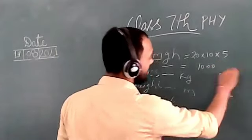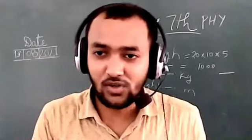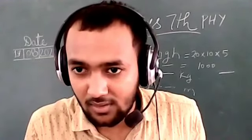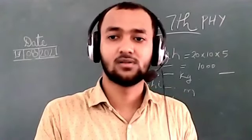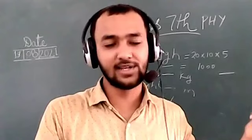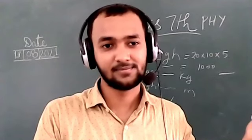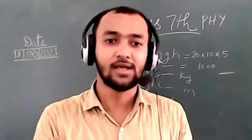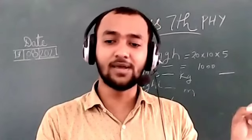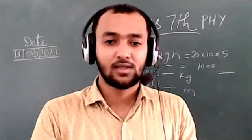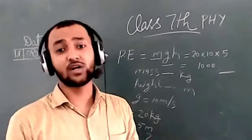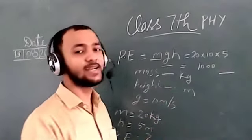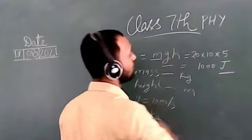What is the SI unit of energy? The SI unit of energy is Joule. The SI unit of every form of energy — potential energy, kinetic energy — is Joule. So the potential energy calculated is 1000 Joule.